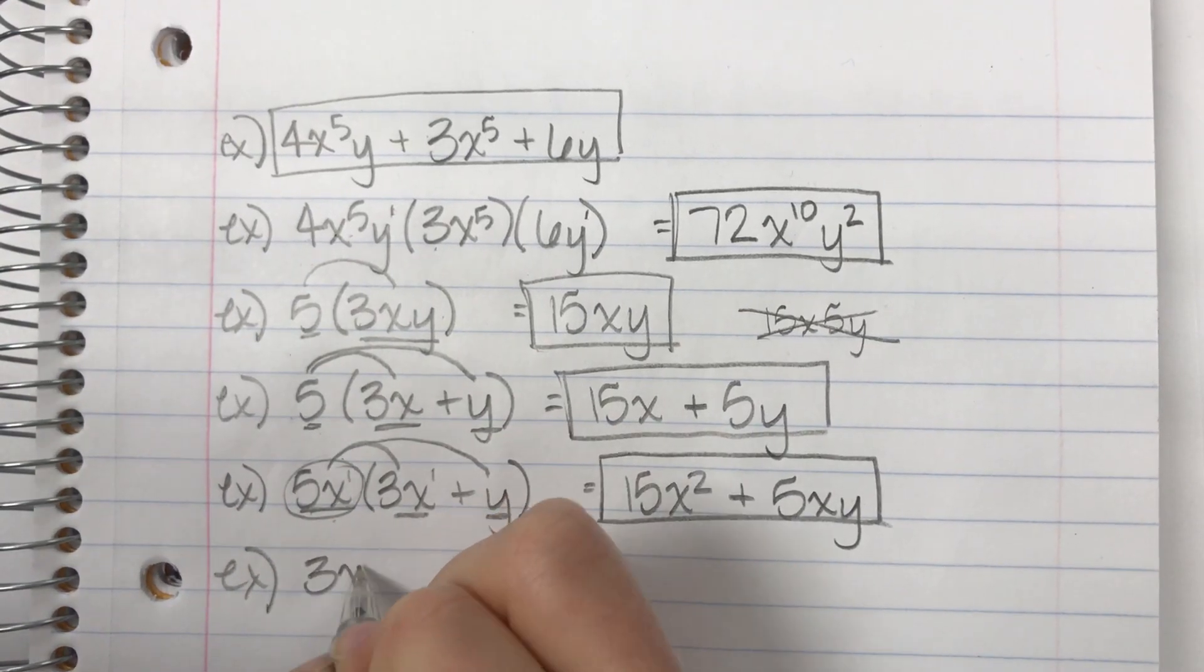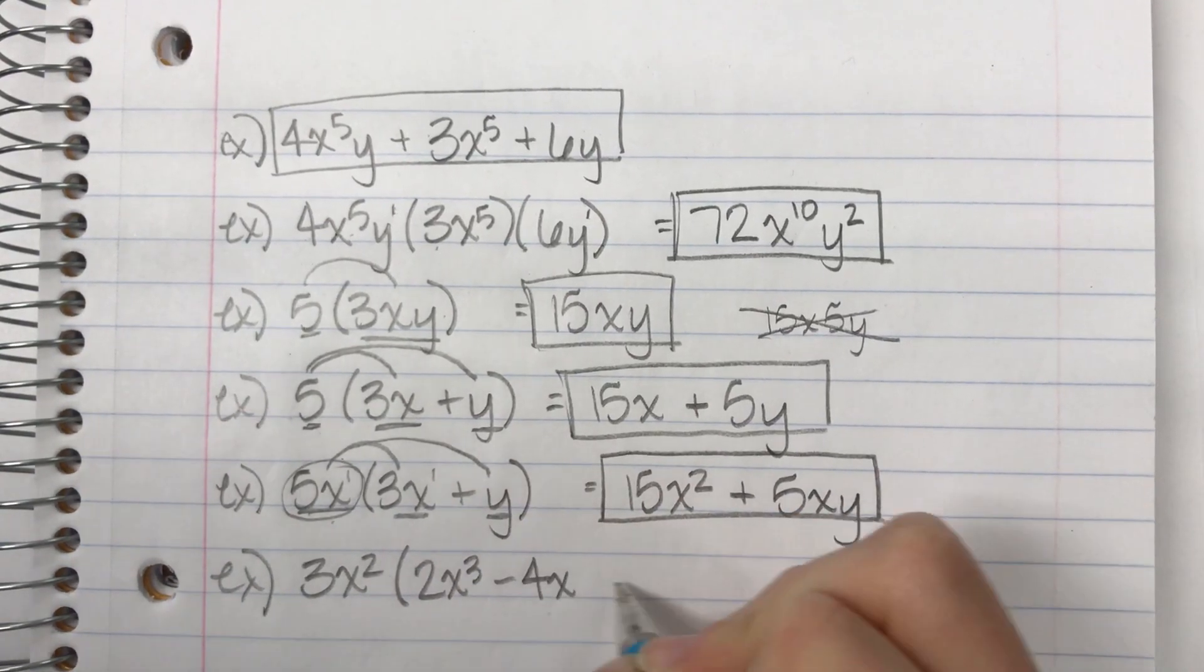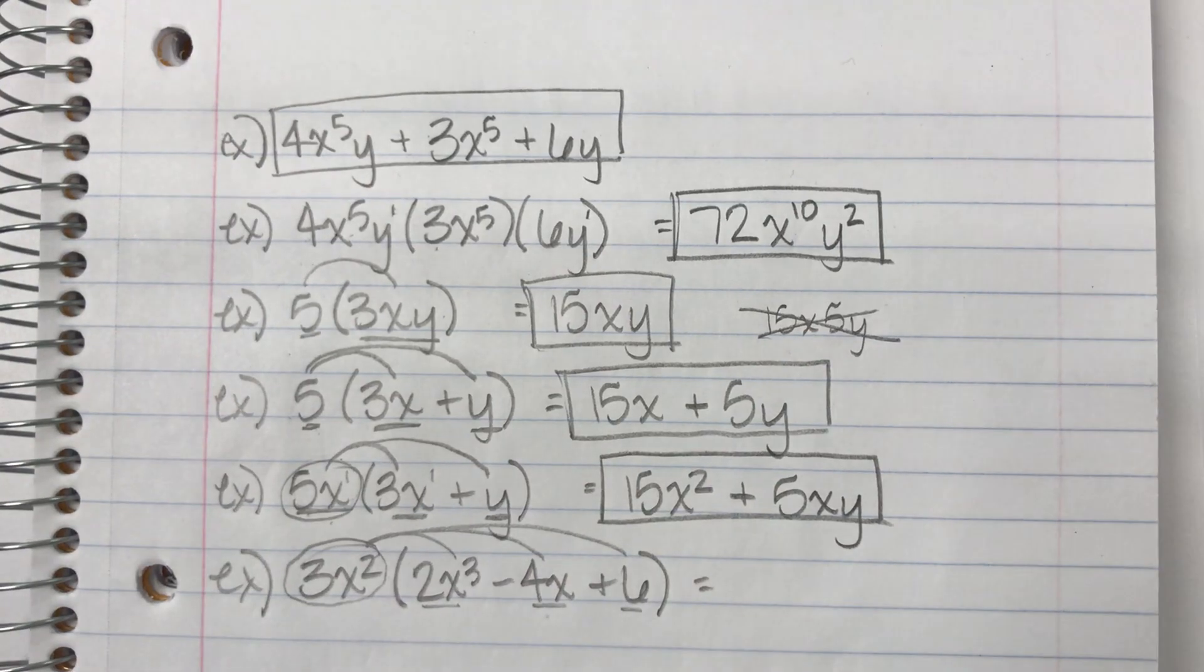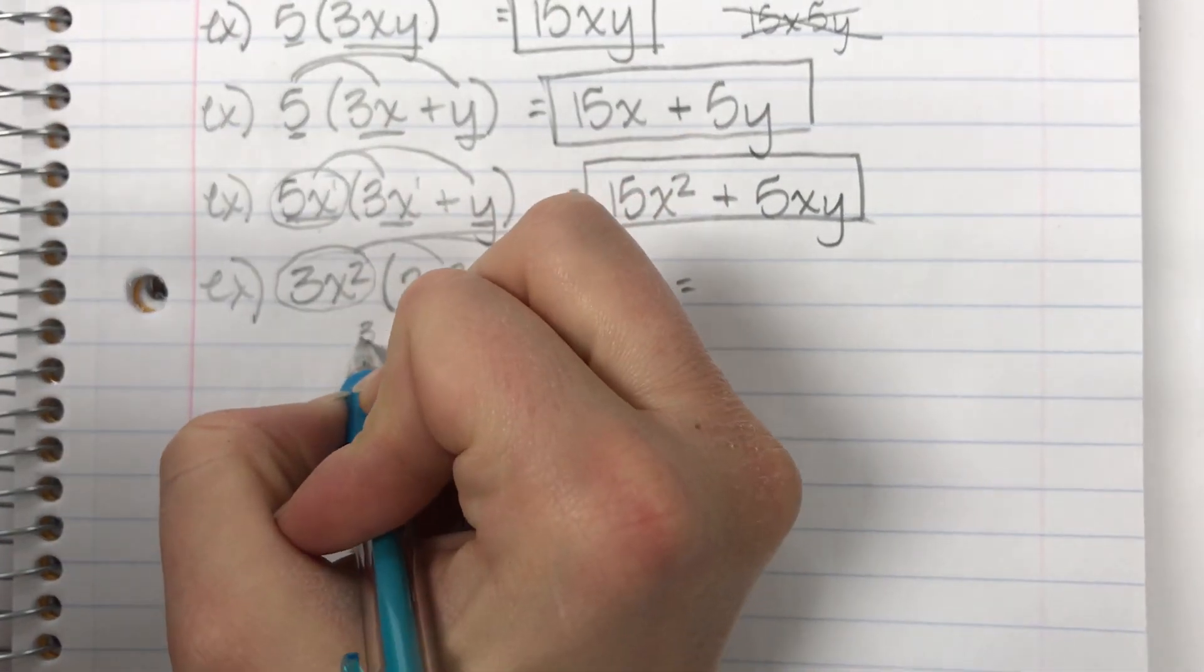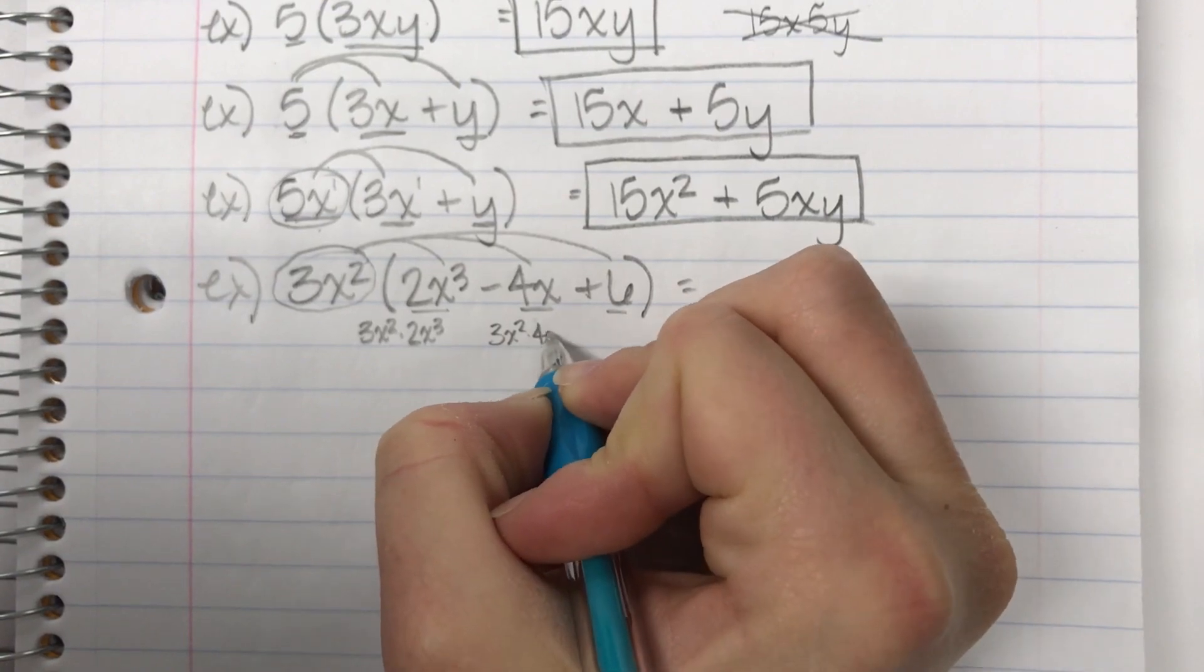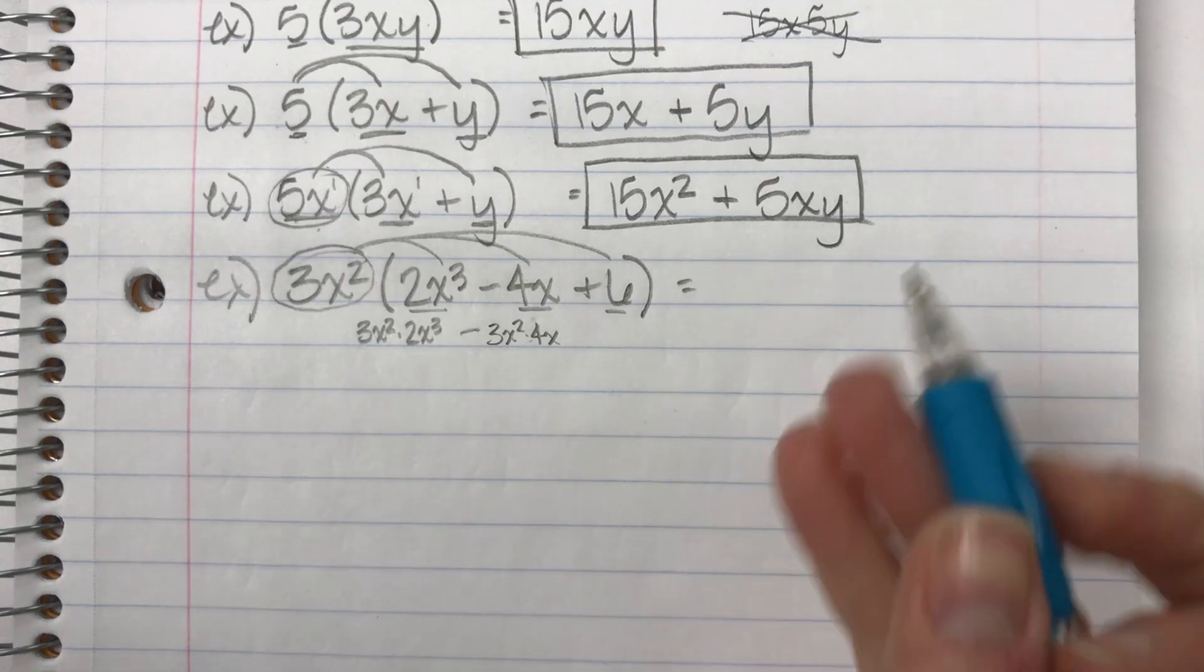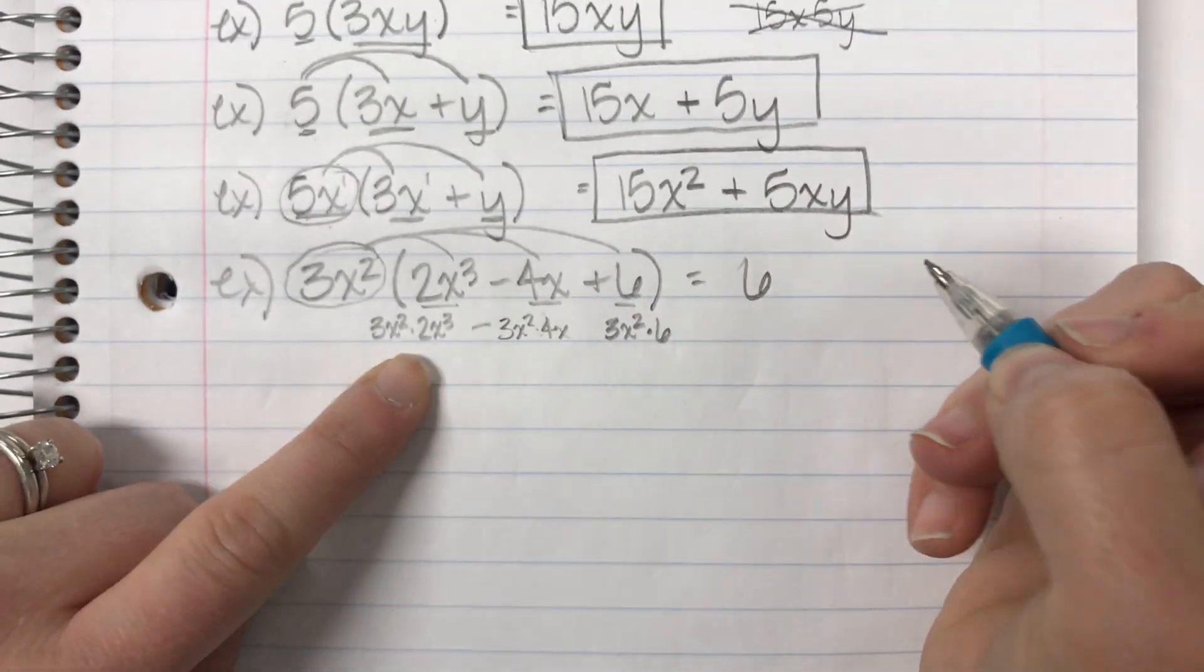All right. What about 3x squared times 2x to the third minus 4x plus 6? I have 1 term being distributed to 3 terms inside. So what I'm going to do to kind of help myself keep track of this, because these are some weird multiplication that we haven't always seen before, is I'm going to actually write out, so I want 3x squared times 2x to the third. I want 3x squared times 4x. And I'm going to kind of ignore that negative for a minute, so I know it's going to be minus right there. You could put negative 4x in here. It just seems like it's easier to just put the minus. And then I want 3x squared times 6.